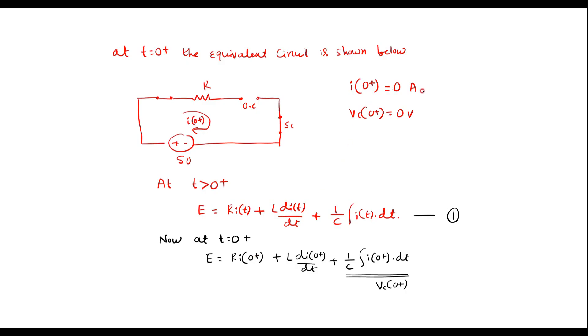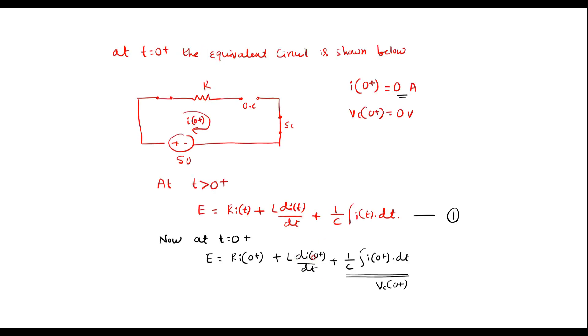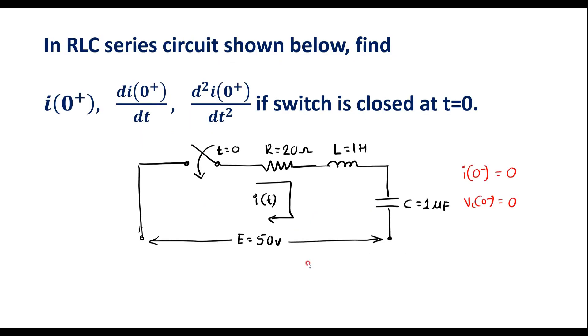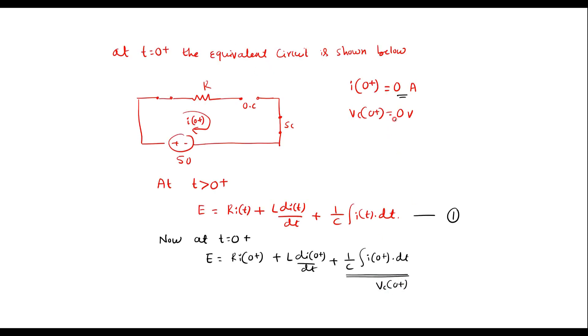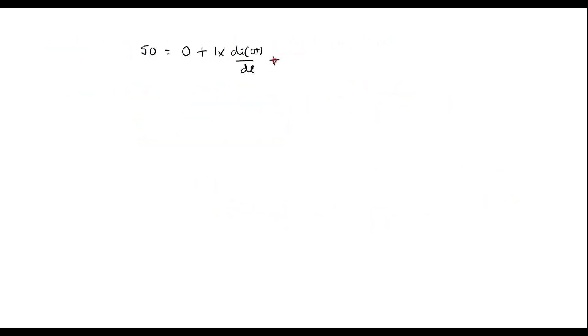Now let me substitute the values. E is 50, equals R·i(0+) — since i(0+) is 0, R·i(0+) is 0 — plus L·di(0+)/dt. L value is given as 1 henry, so we have 1·di(0+)/dt. Plus Vc(0+), which is 0. Therefore, di(0+)/dt is equal to 50 amperes per second.